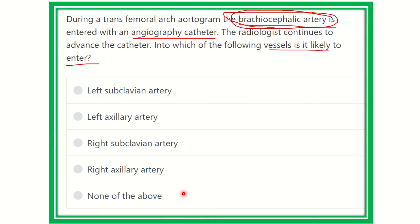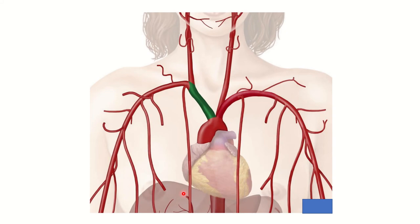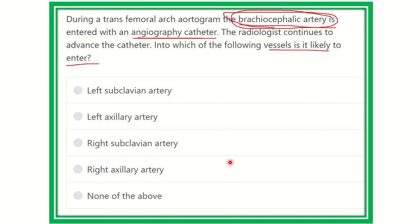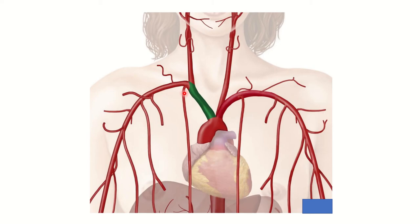Looking at the picture, during the transfemoral arch aortogram the angiography catheter is introduced through the groin, travels to the heart, then goes to the arch of the aorta, and first enters the brachiocephalic artery. This point is important — the brachiocephalic artery.